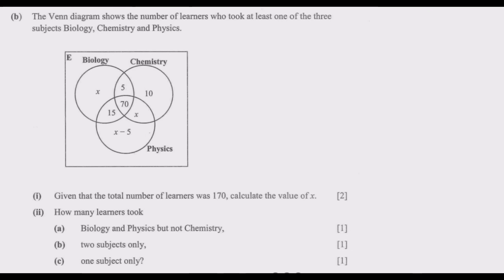Now let us look at Question 1 Part B. A Venn diagram shows the number of learners who took at least one of three subjects: Biology, Chemistry, and Physics. Given that the total number of learners was 117, we need to calculate the value of x. We add all values in the three sets and equate the sum to 117.